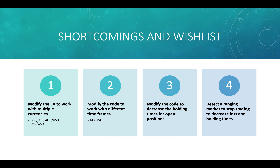Three, we want to modify the code to decrease the holding times for open positions. We found out that the maximum holding time was well over 24 hours, and since we're following a scalping algorithm, we want it to be under 24 hours. We found that the average time for an open position was several hours, and again, since this is scalping and the whole goal is to jump in and out of the market very rapidly, ideally you want the average time for an open position to be several minutes, or even better, a few seconds.